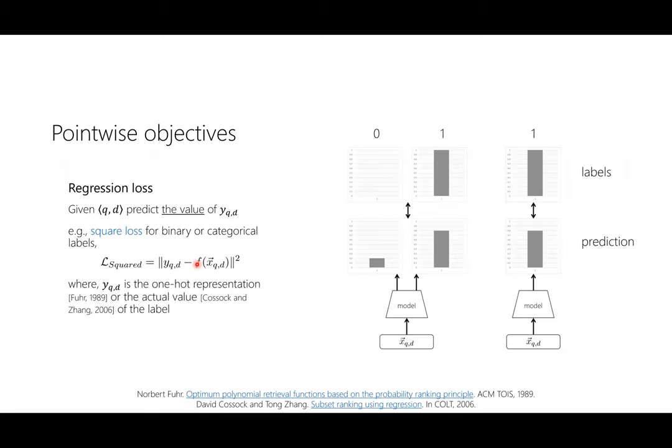Now for the pointwise objective — let's actually look at the diagram on the right-hand side. This is the simplest version. Imagine your ranking model takes a query-document feature vector as input...